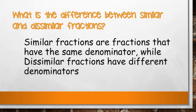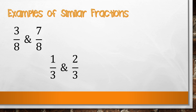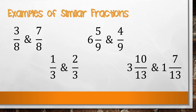Similar fractions are fractions that have the same denominator, while dissimilar fractions have different denominators. Examples of similar fractions include: 3/8 and 7/8; 1/3 and 2/3; 6 and 5/9 and 4/9; 3 and 10/13 and 1 and 7/13. They are considered similar fractions because they have the same denominator.